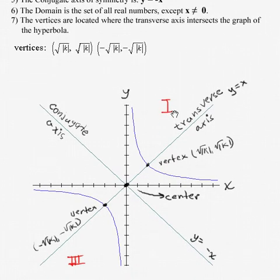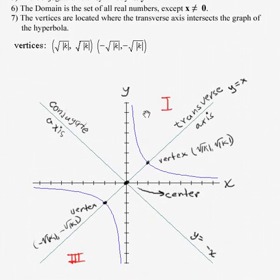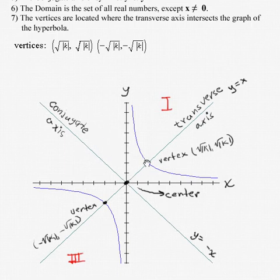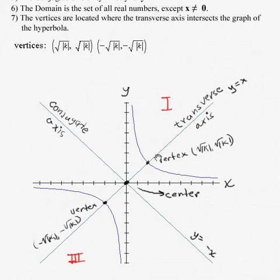Looking at a graph where k is positive, we see that the branches of our hyperbola are in quadrant 1 and quadrant 3. The x axis and y axis are the asymptotes. The transverse axis of symmetry is the equation y equals x. The conjugate axis is y equals the opposite of x. The center is at (0, 0), and the two vertices are where the transverse axis intersects the hyperbola.